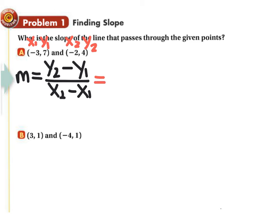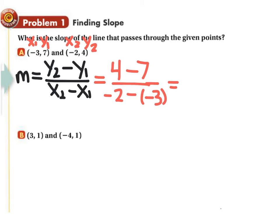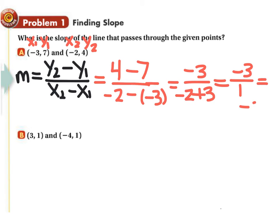So it's y2, which is 4, minus y1, which is 7, over x2, which is negative 2, minus x1, which is negative 3. Now if I simplify, 4 minus 7 gives me negative 3. And negative 2 minus a negative means I'm really doing negative 2 plus 3. This becomes negative 3 over positive 1, so the final answer is negative 3.